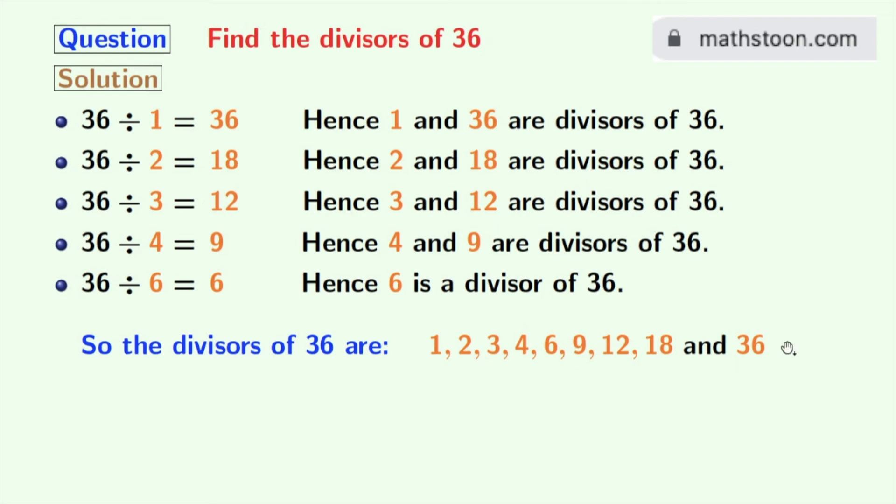Now look at these divisors. Among these numbers, 2 and 3 are prime numbers. Because these 2 numbers do not have any divisor other than 1 and this number itself. So we can say that the prime divisors of 36 are 2 and 3.